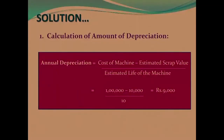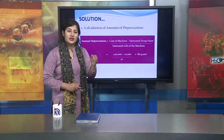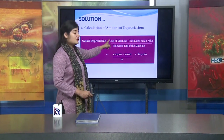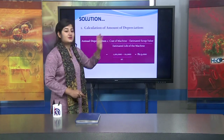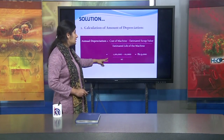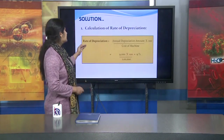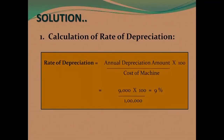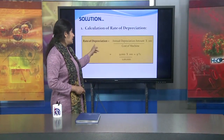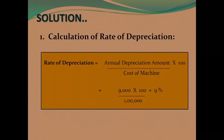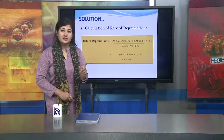So the annual depreciation is: cost of machine 1 lakh minus scrap value 10,000, divided by total life 10 years, which gives us 9,000 per year. Next, the rate of depreciation formula is: annual depreciation amount multiplied by 100, divided by the cost of machine. That is 9,000 into 100 divided by 1 lakh, which equals 9 percent.